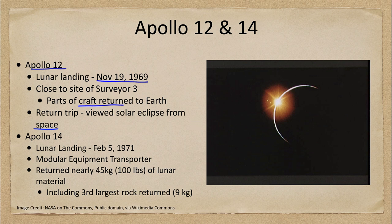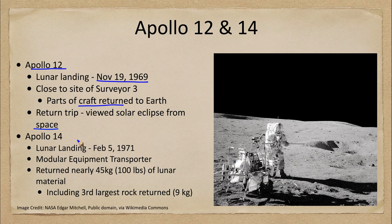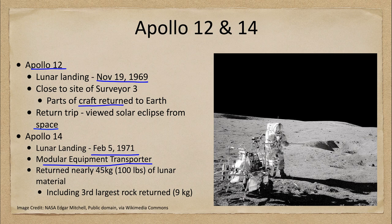The Apollo 14 mission was a couple of years later and landed on February 5th, 1971. It brought for the first time a modular equipment transporter — a wheeled device that allowed astronauts to carry more material. There were lunar rovers in later missions, but Apollo 11, 12, and 14 did not have them. This was the first way to carry more equipment and free up the astronauts from carrying material around.